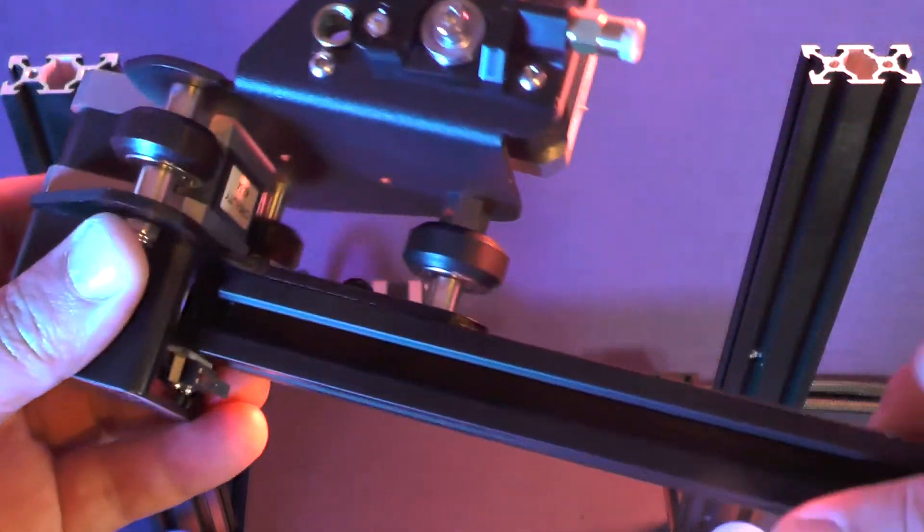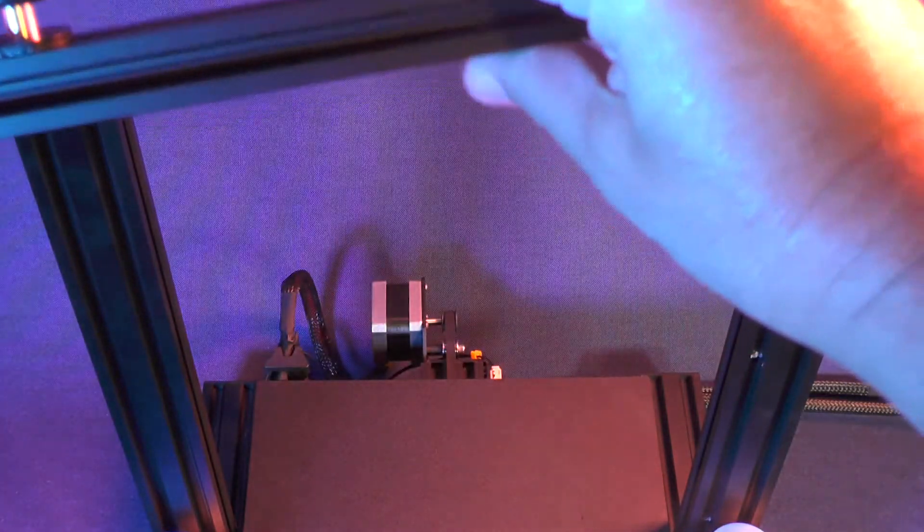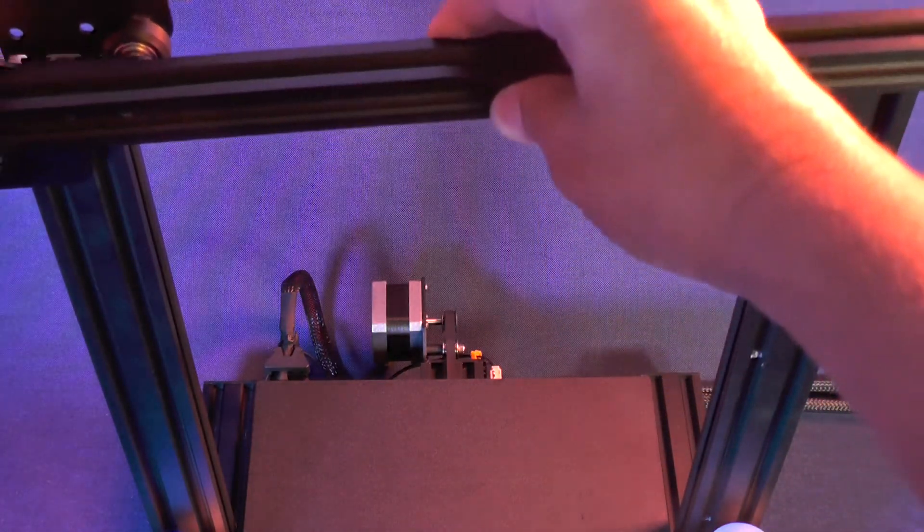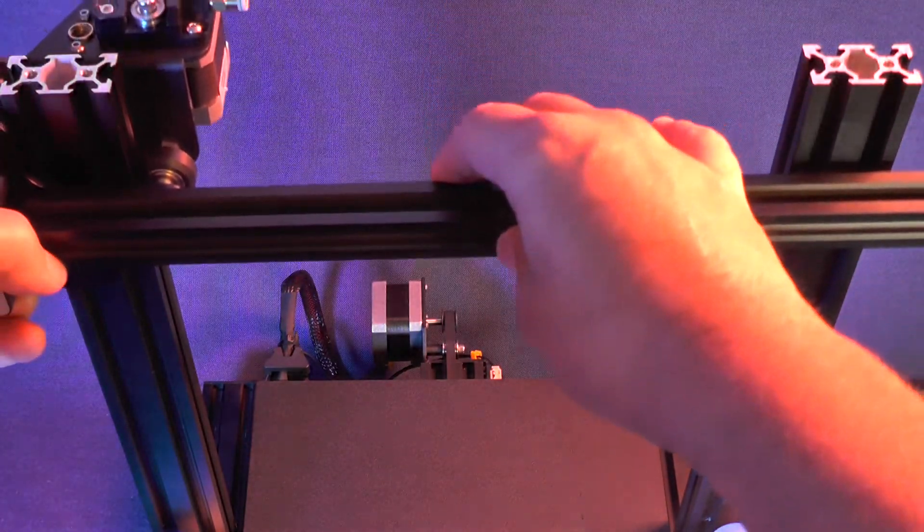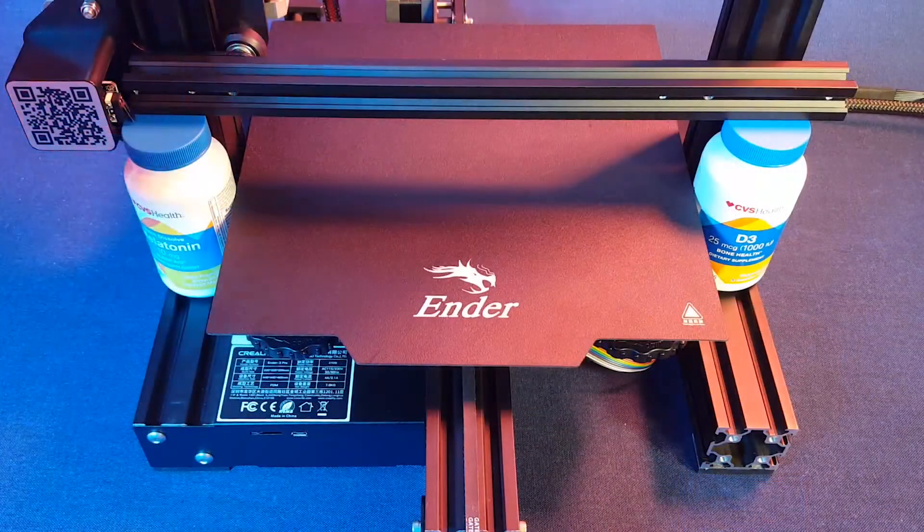Now, you pick up the extruder assembly and slide it on top of the 2040 aluminum extrusion that is located on the right side of the base of the printer. Let it slide down until the 2020 aluminum extrusion is resting on top of the two bottles.